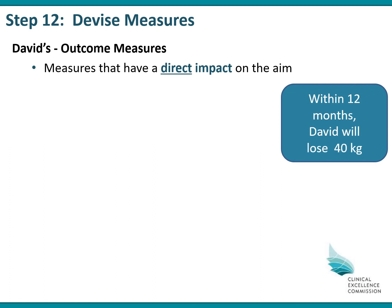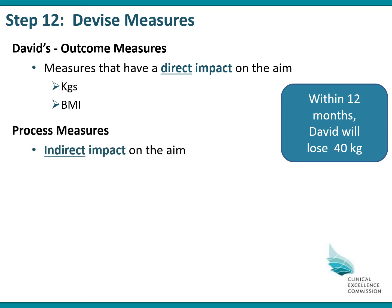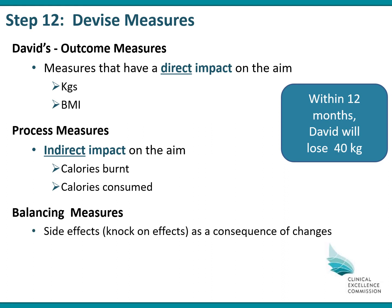Back to David as an example of the family of measures. The outcome measures could be things like kilograms lost and his BMI. Some of the process measures, which have an indirect impact on the aim, would be calories burnt and calories consumed. And the balancing measures might be side effects or knock-on effects of the consequences of changes that you might test.